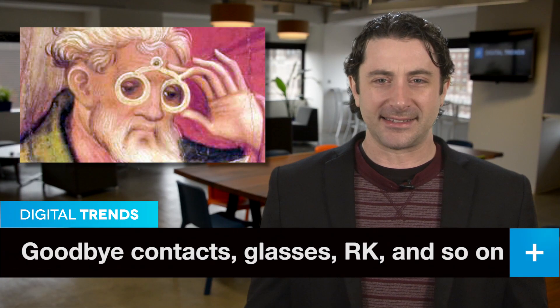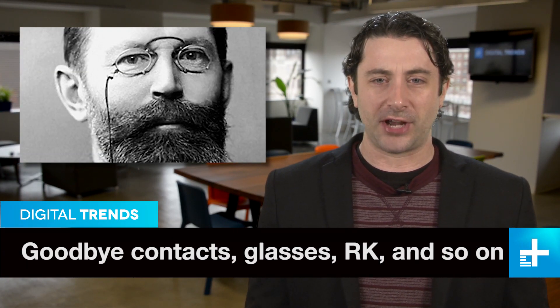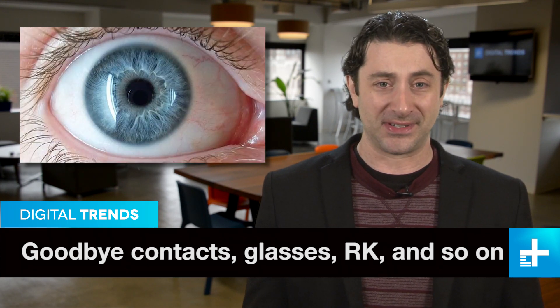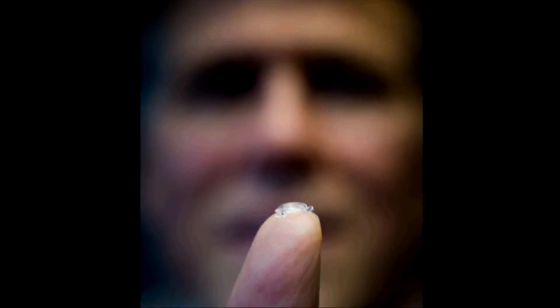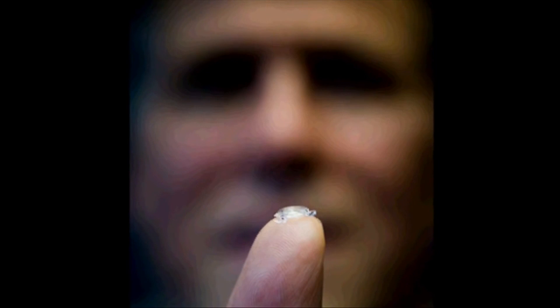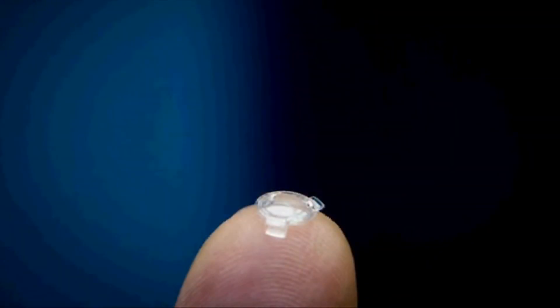If you struggle with glasses, contacts, or bad vision in general, we have some seriously good news. This guy may have just solved every major vision impairment outside of actual blindness. His name is Dr. Garth Webb and what he's invented is this, the Ocumetix Bionic Lens.